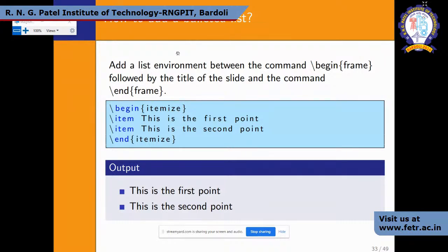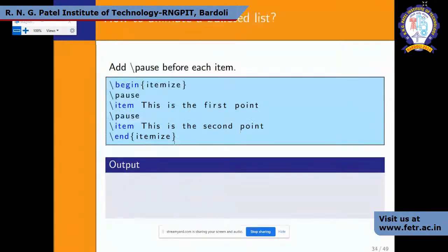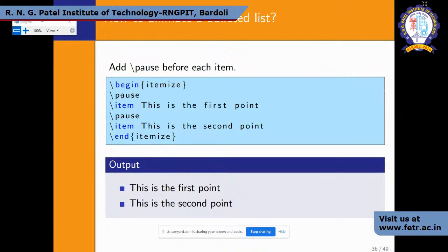You can use different environments within a frame. To write bullet-point content, use \begin{itemize} and \end{itemize}, with \item for each point. This is the first point, this is the second point — the output shows them as bullet items. You can also use \pause — after each item, \pause takes a break before showing the next item. This way the presentation reveals content step by step progressively.